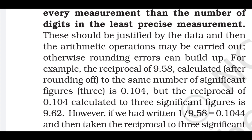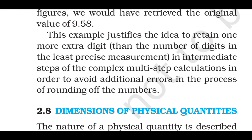For example, the reciprocal of 9.58, rounded to 3 significant figures, is 0.104; but the reciprocal of 0.104 calculated to 3 significant figures is 9.62, not 9.58. However, if we write 1/9.58 = 0.1044 and then take the reciprocal to 3 significant figures, we retrieve the original value of 9.58. This justifies retaining one extra digit in intermediate steps of complex multi-step calculations to avoid additional errors in the rounding-off process.